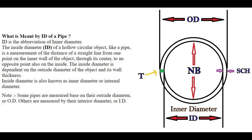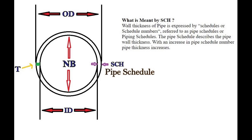Note: some pipes are measured based on their outside diameter, while others are measured from their interior diameter, or ID. Now, what is SCH? SCH is known as pipe schedule.